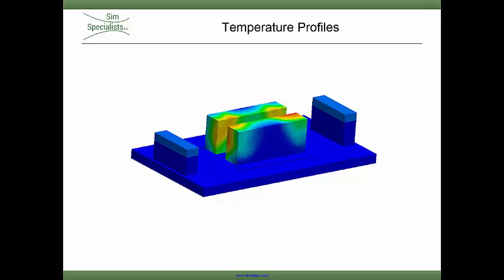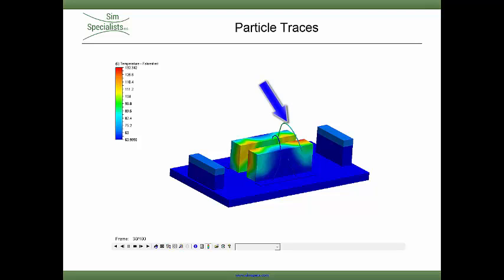To further investigate this temperature rise near the end of the rows, we can add particle traces. The particle trace on the right recirculates back into the server after passing through and rising in temperature during each pass.